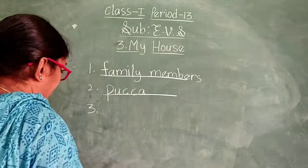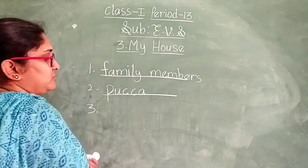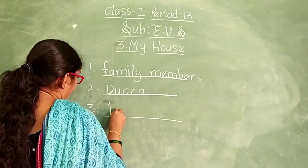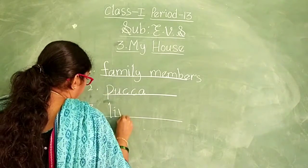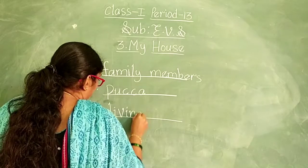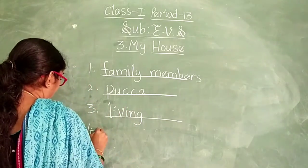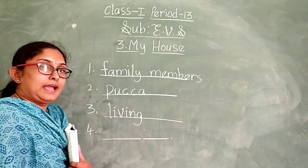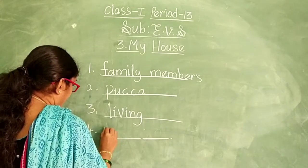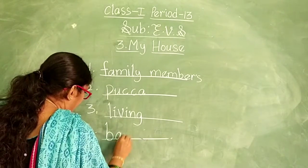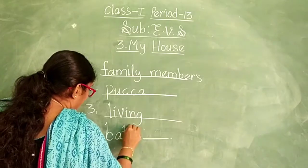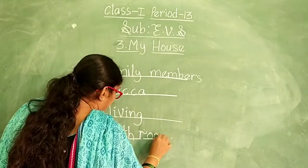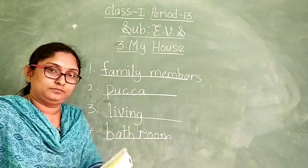We keep sofa in a — where do we keep sofa? In the living room. L-I-V-I-N-G, living room. Next: we bathe in a — where do we take a bath? In the bathroom. B-A-T-H-R-O-O-M, bathroom.